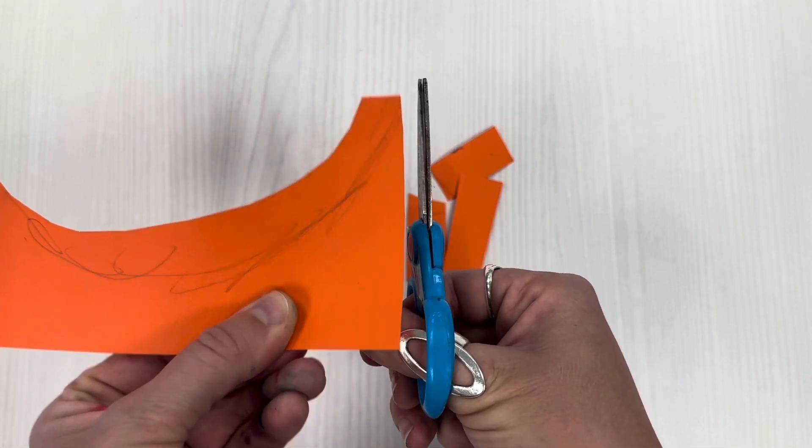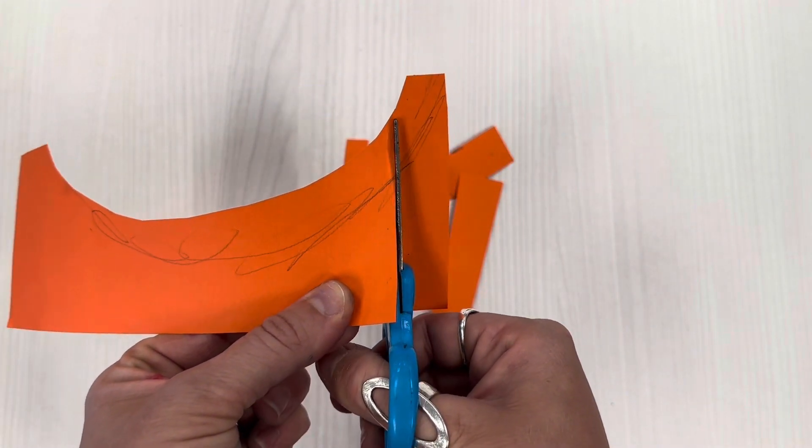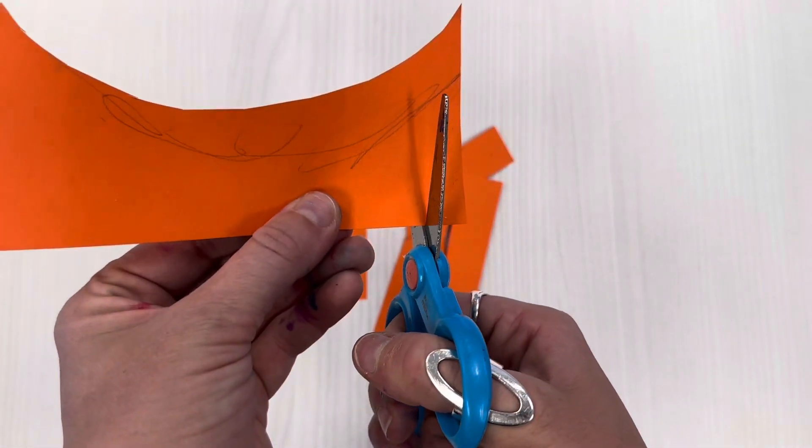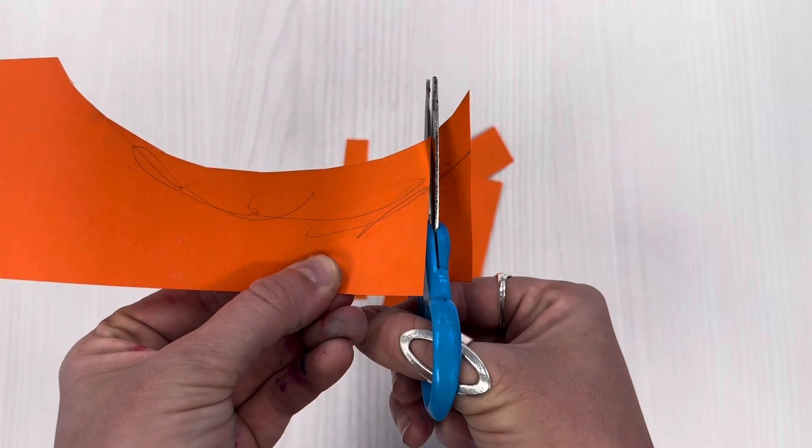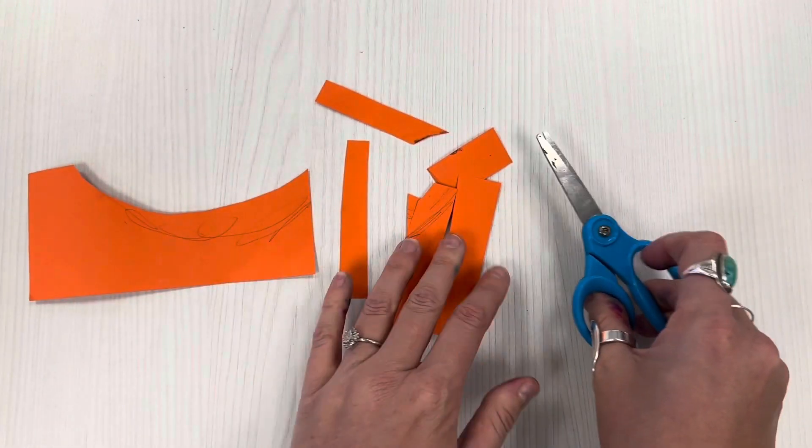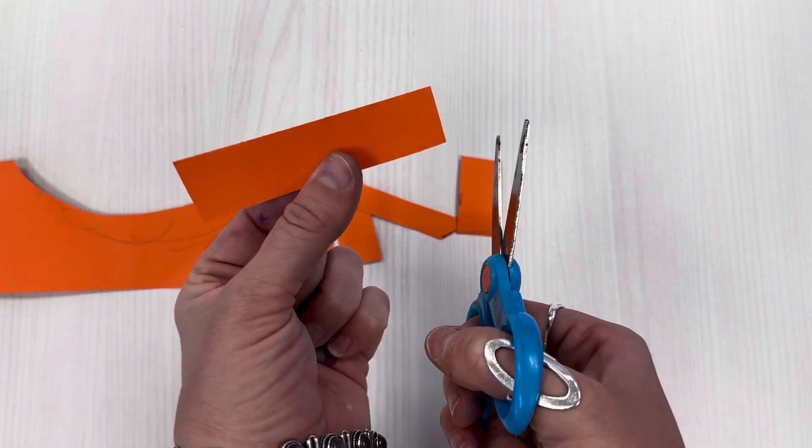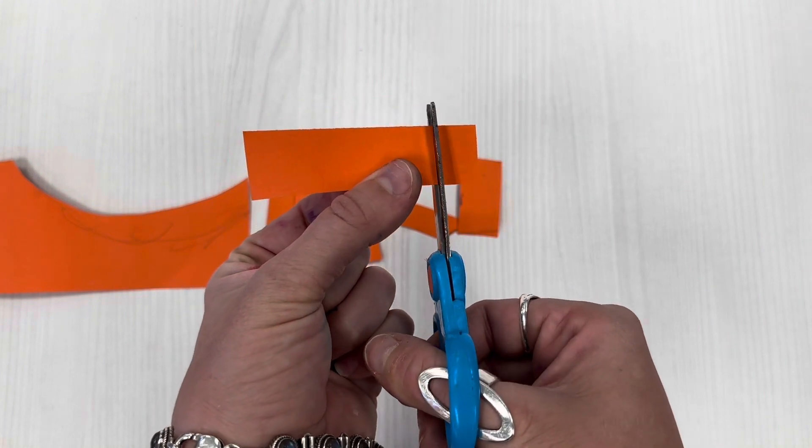I'm gonna go so slow and practice cutting my paper. Opening and closing. Scoot it forward. Chomp. And I will have so many little pieces. I can even cut some of these into smaller pieces. Snip. Snip.